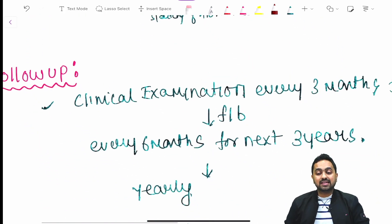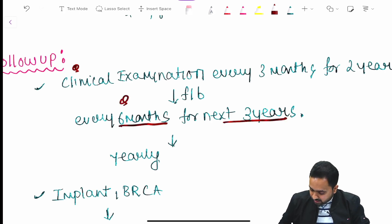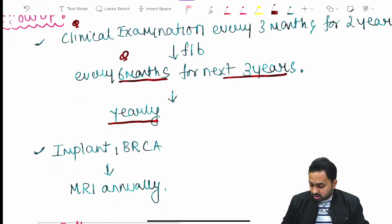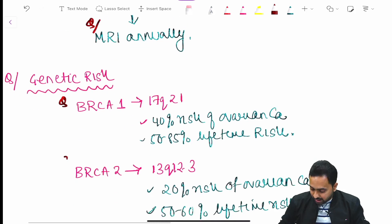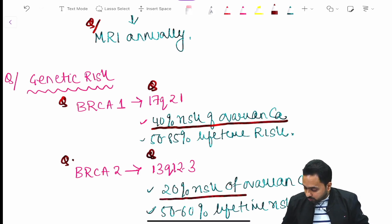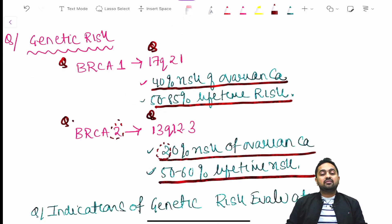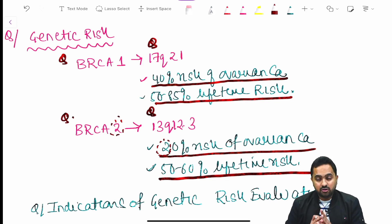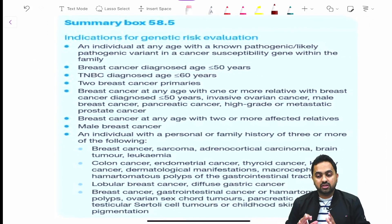Follow-up includes clinical examination every 3 months for 2 years, then every 6 months for the next 3 years, then yearly. Patients with implants or BRCA gene mutations require annual MRI. Regarding genetic risk, BRCA1 is located on 17q21 and BRCA2 on 13q12.3. BRCA1 carries a 40 percent risk of ovarian cancer and 50–85 percent lifetime breast cancer risk. BRCA2 carries a 20 percent ovarian cancer risk and 50–60 percent lifetime breast cancer risk.